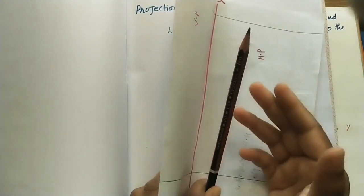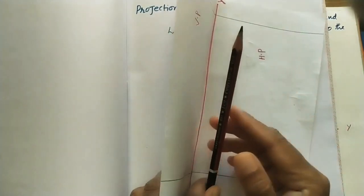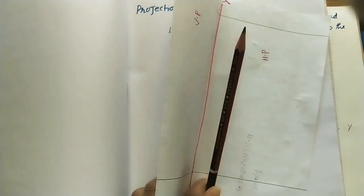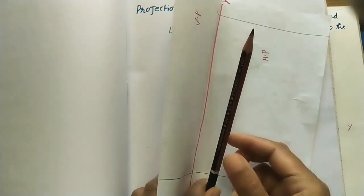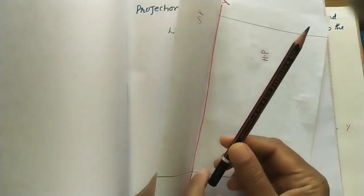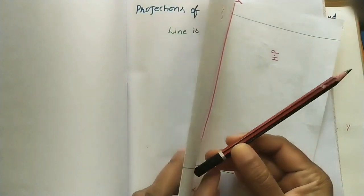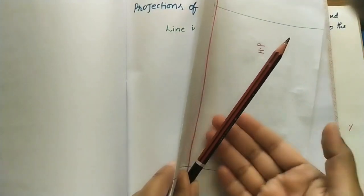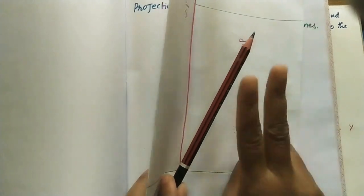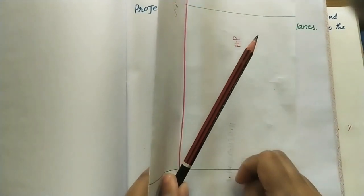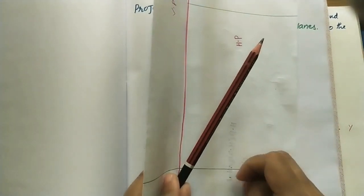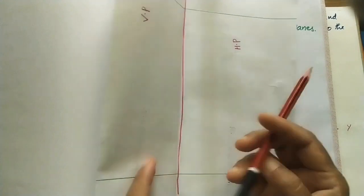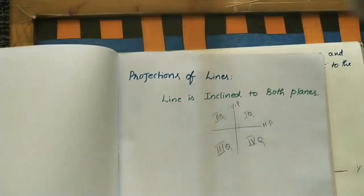That's why I'm making two assumptions. In the first assumption, the line makes an angle with HP and is parallel to VP. In the second assumption, the line makes an angle with VP and is parallel to HP. I'll draw two diagrams with these two assumptions and then combine them at the end.